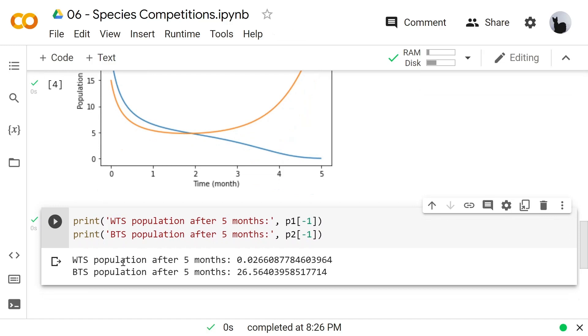And let's examine the last populations or each species population after 5 months and it looks like the WTS population after 5 months is 0 and the BTS population after 5 months is 26.5 or let's say it's 27. So we can say that in this phenomenon, the BTS survive the competition while the WTS are not.